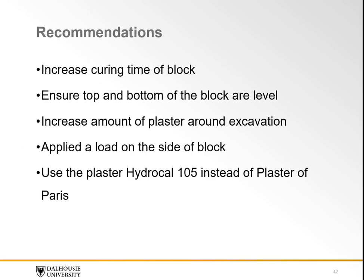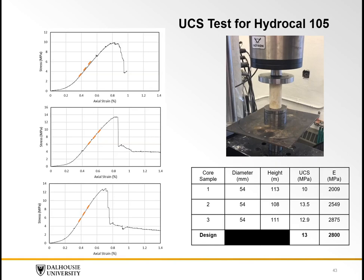The model did provide good results; however, some improvements could be made. The cure time of the block could be increased to a month to ensure it completely sets. Measures could be taken to ensure the top and bottom of the block are perfectly level. The amount of material around the excavation could be increased, especially in the sidewalls, to reduce the chance of early block failure at the perimeter. A load could be applied to the sides to provide confinement, improving the chances that the outer portion of the block does not fail. Finally, instead of using plaster of Paris, it could be substituted for the product HydroCal 105, which is substantially more brittle and believed to create better results in laboratory tests.